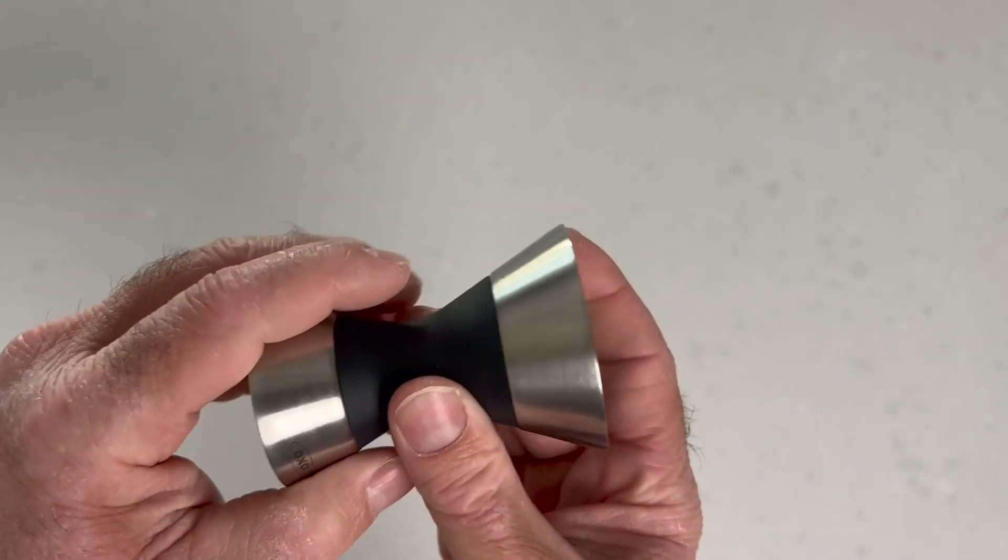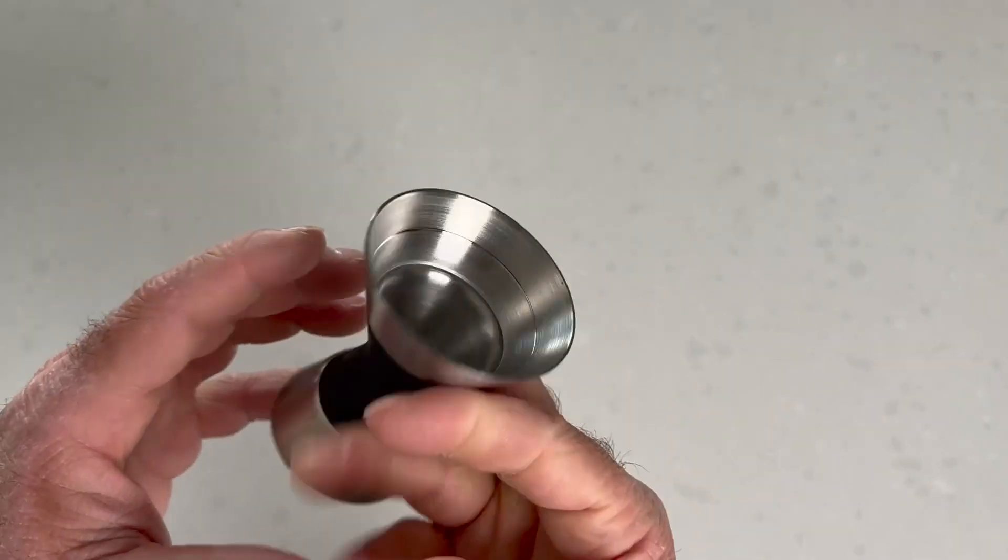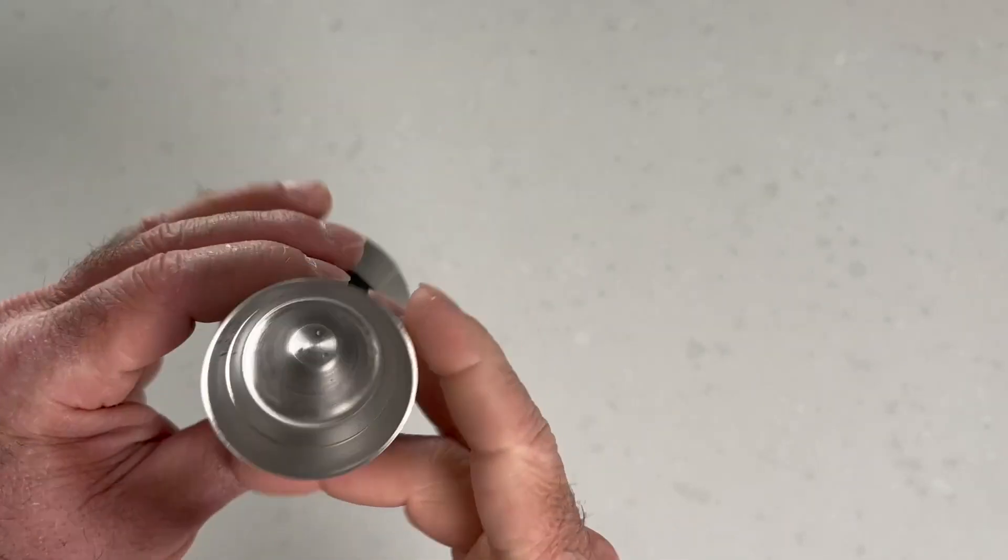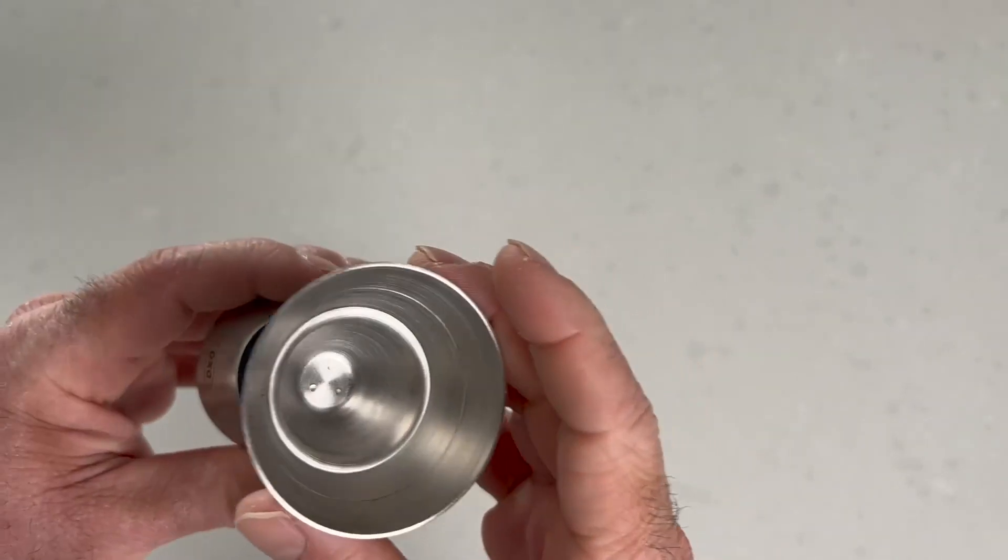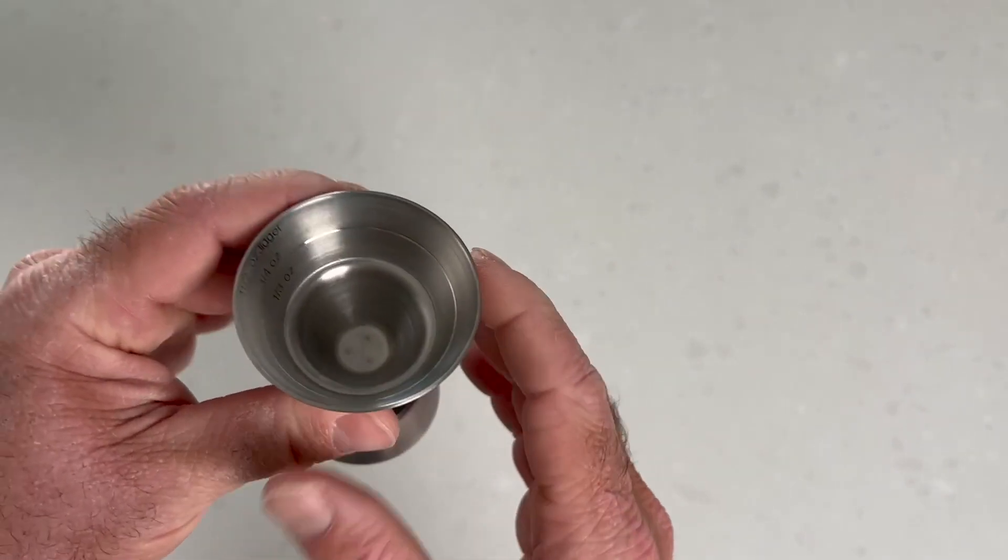One of my favorite things about it is the rubberized grip in the middle, which makes it easy to hold and use. It works as a jigger should—it measures liquid and pours easily.